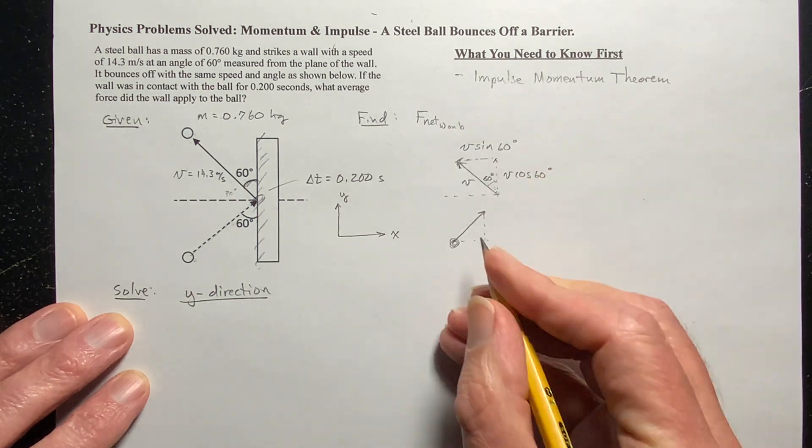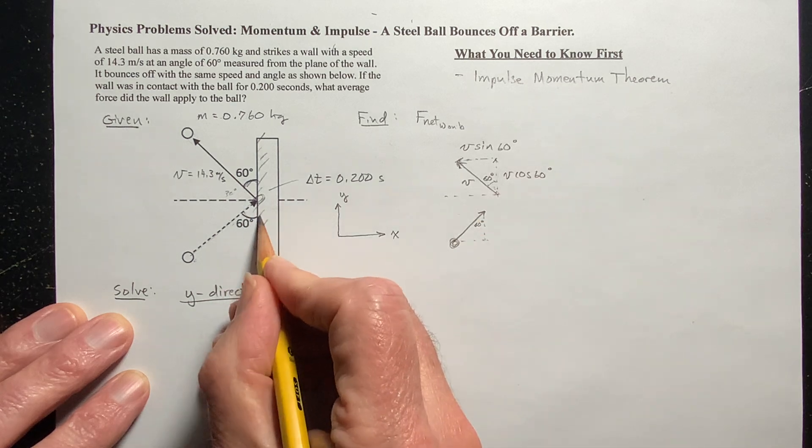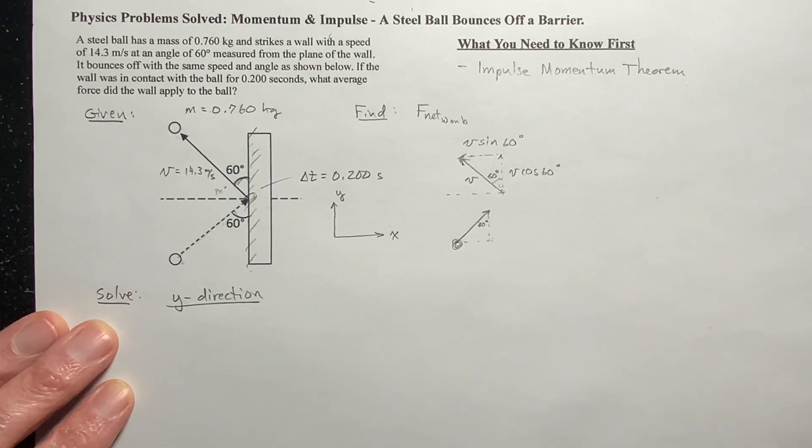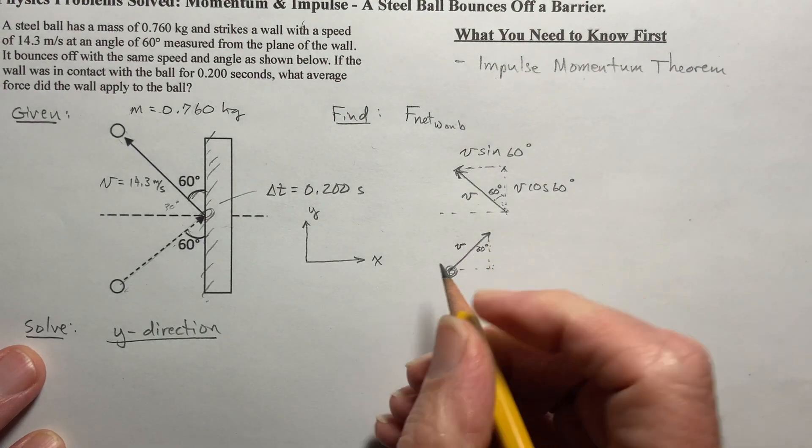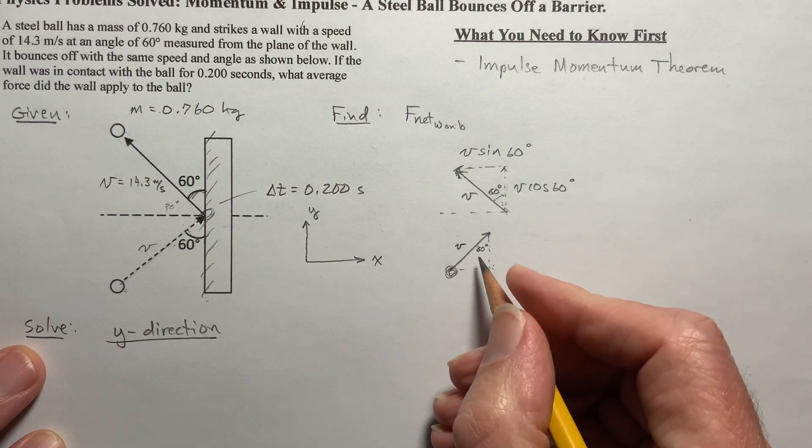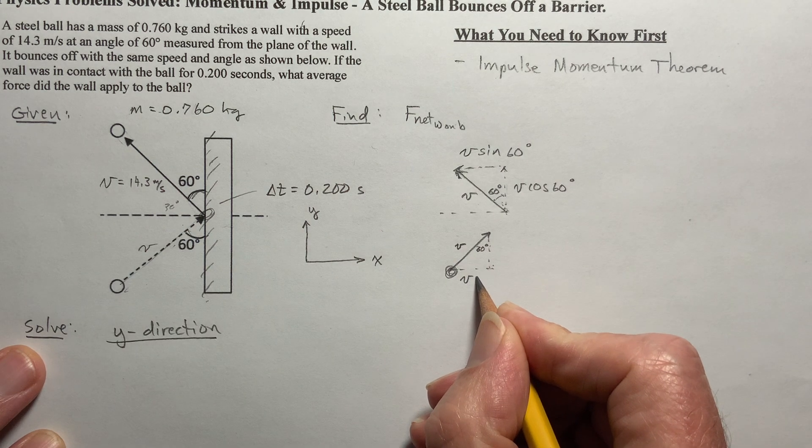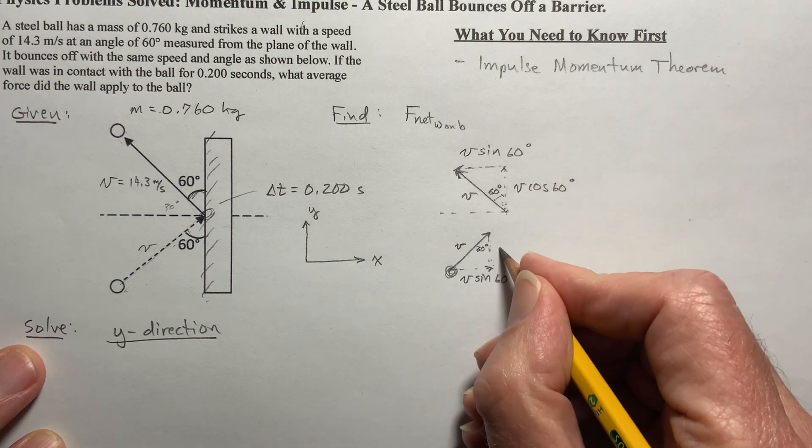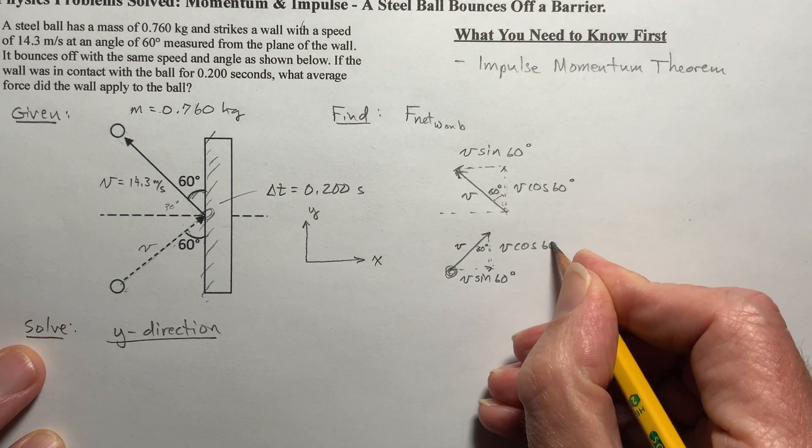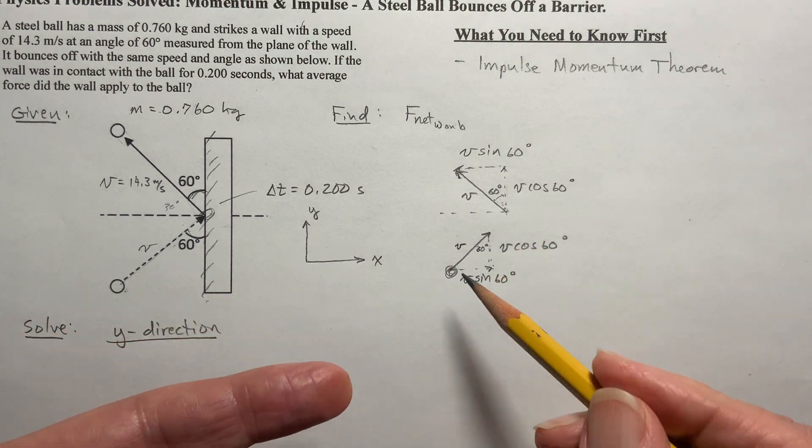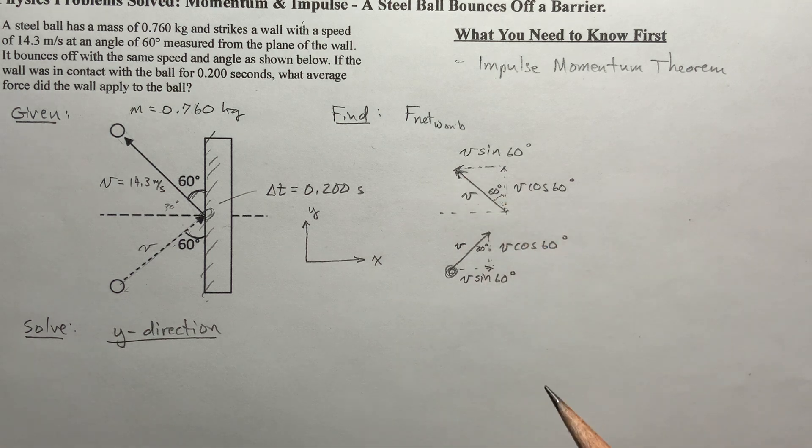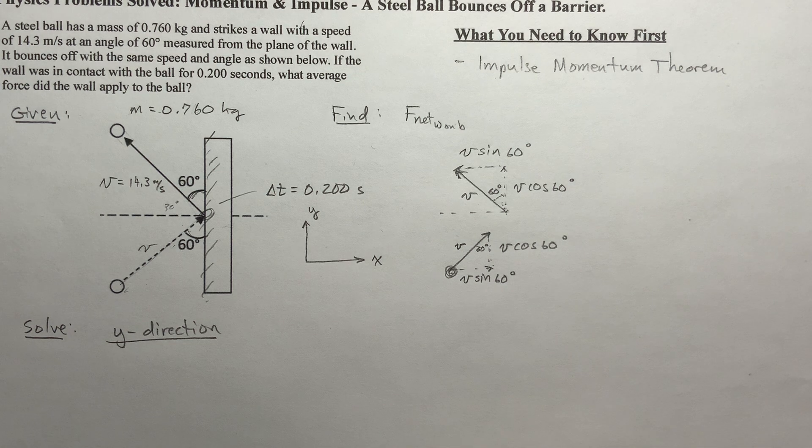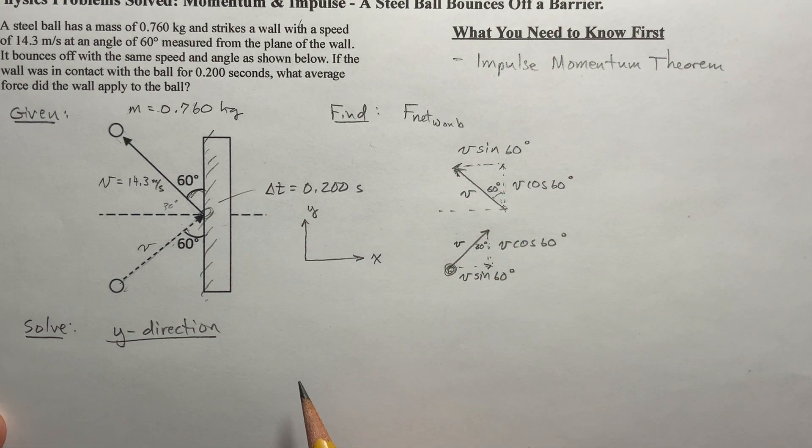And then the x component of this is going to be the hypotenuse times the sine of the, because it's right, it's opposite, it's sine of 60 degrees. Okay. So that may come in handy here. Now, when I look at this, this one down here, it's doing the same thing, but kind of the opposite. So if I look at this, and this, right, this is 60 degrees up here, right, 60, 60. And, and so if this, this is still the same speed, right, this is the velocity, that 14.3. So this right here is opposite. So this is V times the sine of 60 degrees. And then this is V times the cosine of 60 degrees.